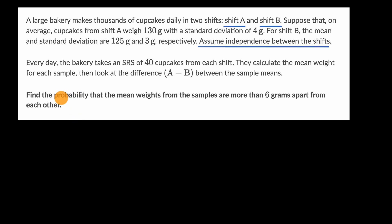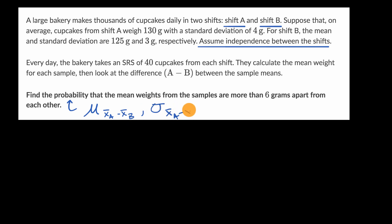In order to tackle this question, we're going to have to think about the mean of the sampling distribution for the difference in sample means — that's sample mean from group A minus sample mean from group B. We also need the standard deviation of that sampling distribution, and whether this distribution is normal. If we figure out these three things, we just need to find how many standard deviations away from the mean our value is, and use a standard Z table to find the probability.